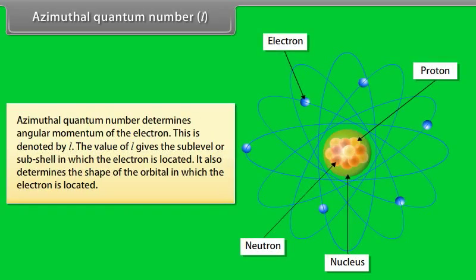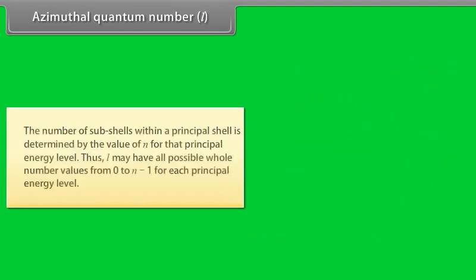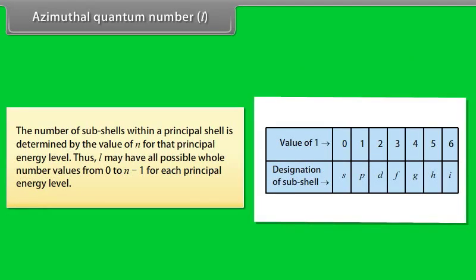Azimuthal Quantum Number L: The azimuthal quantum number determines the angular momentum of the electron. It is denoted by L. The value of L gives the sublevel or subshell in which the electron is located, and also determines the shape of the orbital. The number of subshells within a principal shell is determined by the value of N for that principal energy level.